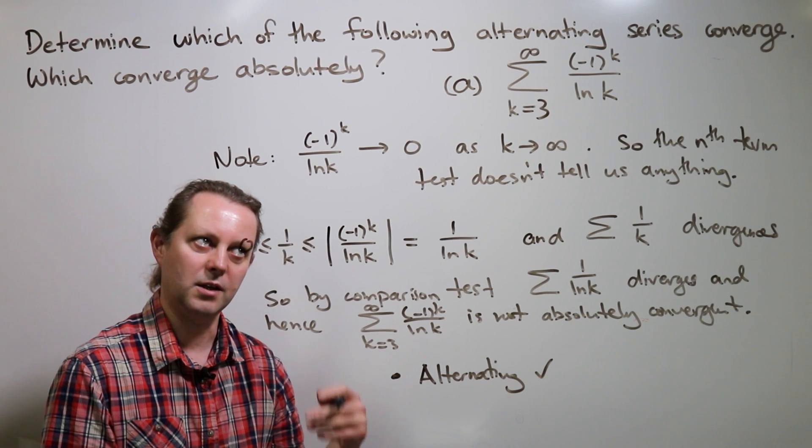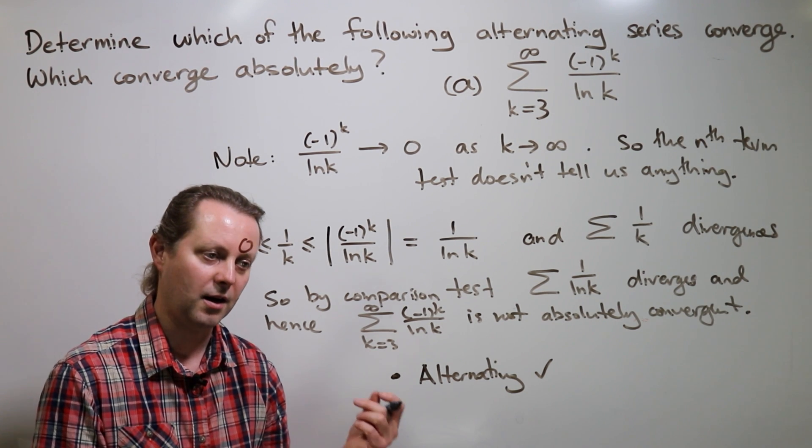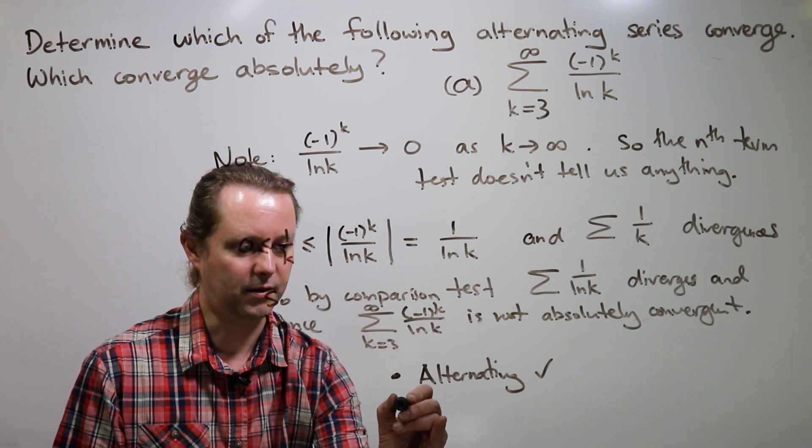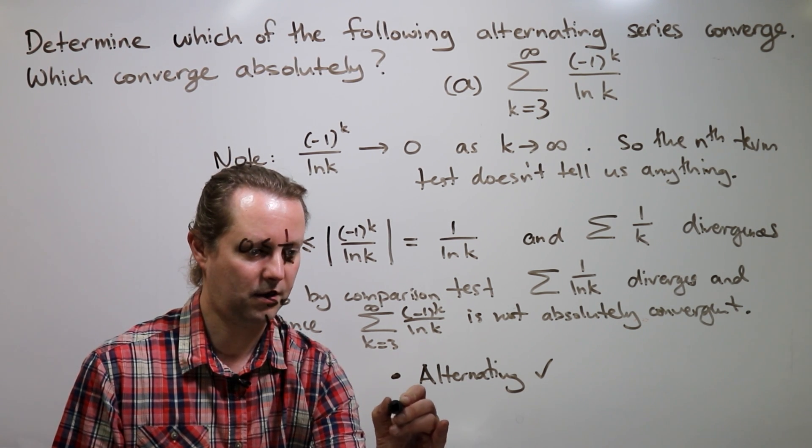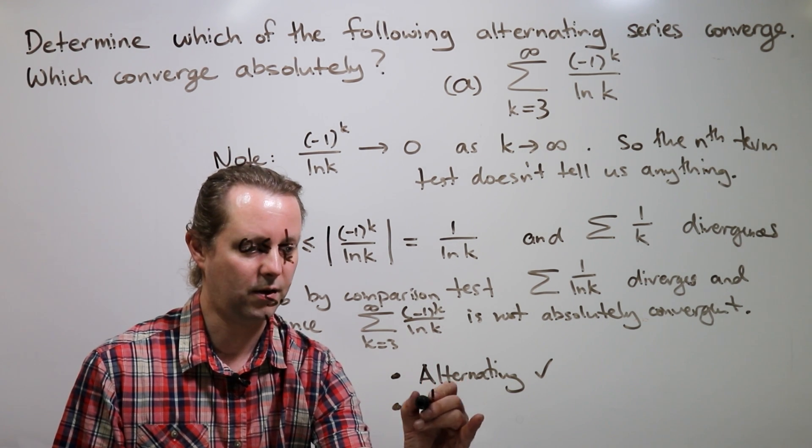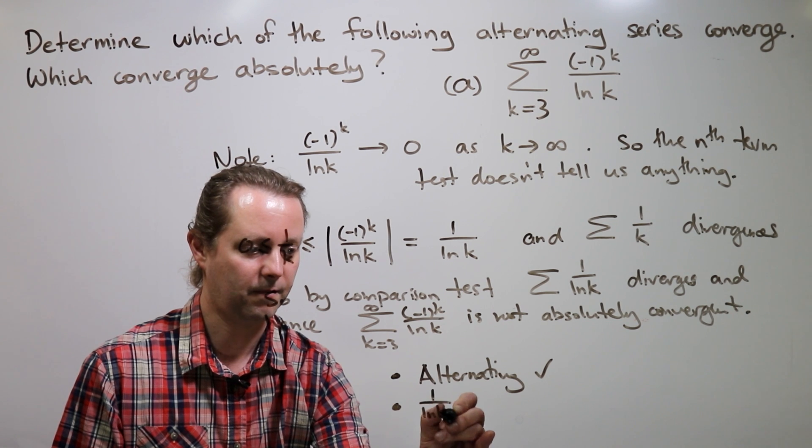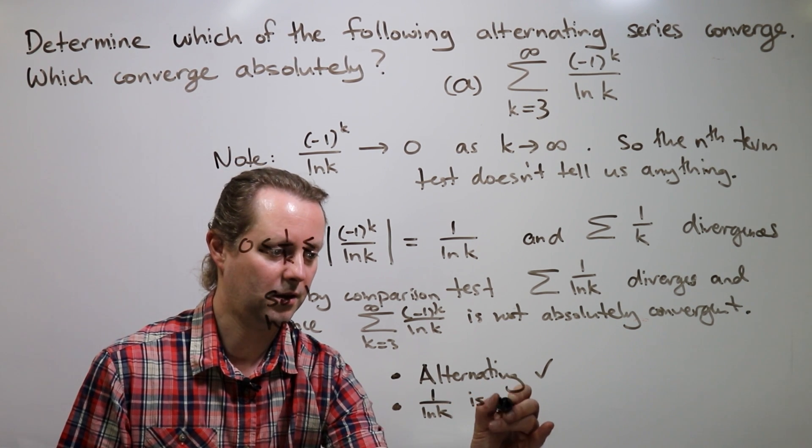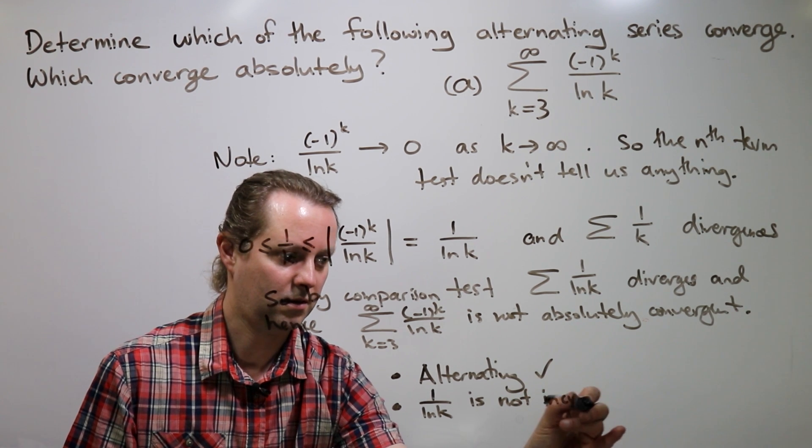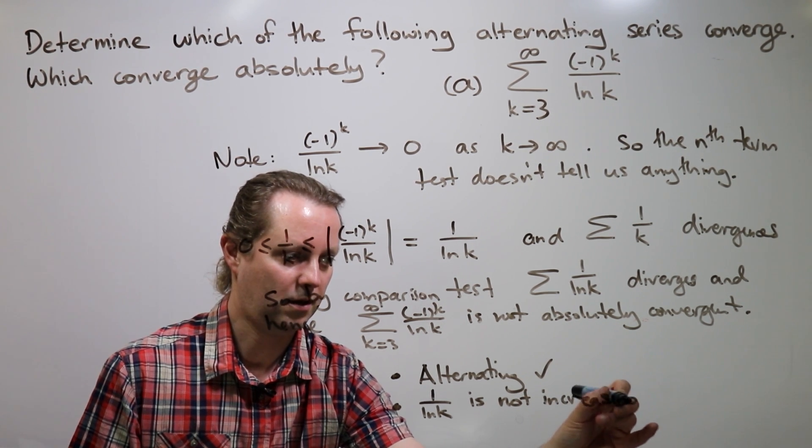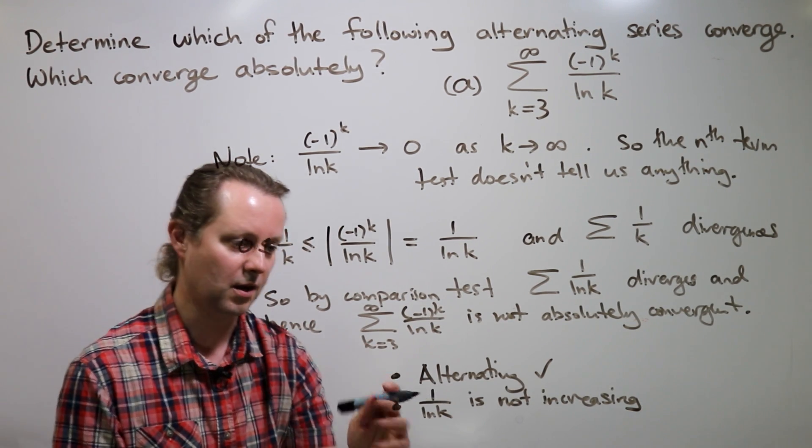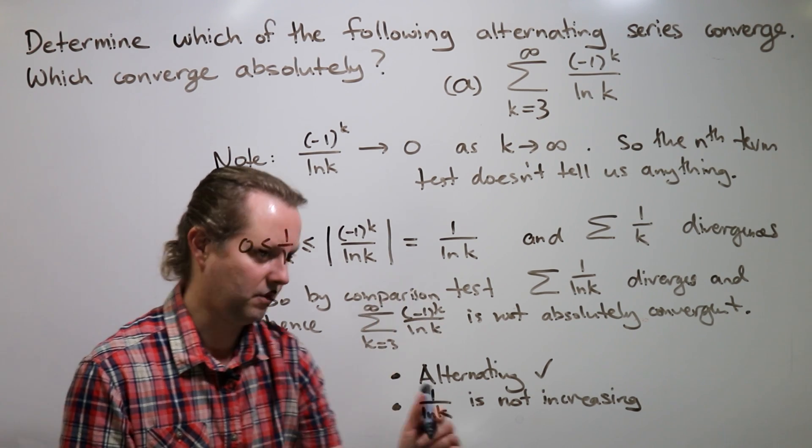The next thing we need to check is that the terms in the series are not increasing, non-increasing. And so the terms in the series are minus one to the k times one over ln k. And I'll just say this is not increasing. I think for a simple function like this, it's fine just to state that it's not increasing. ln k is increasing, one over it is not increasing. Okay, so in fact decreasing.